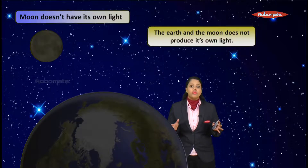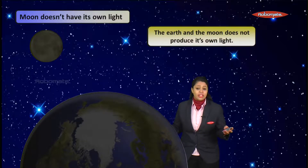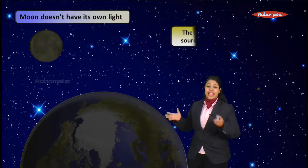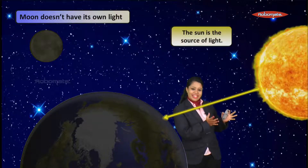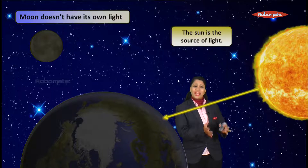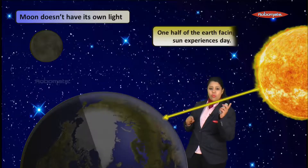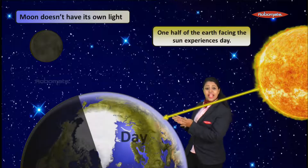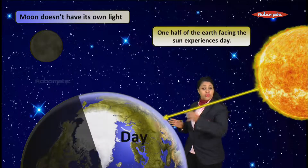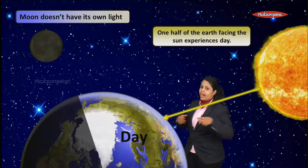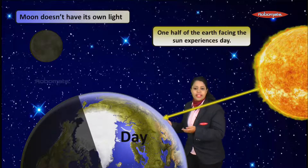The Earth and Moon do not produce their own light. The question arises — how does the Moon illuminate? That is because of the Sun, which is the ultimate source of energy. When light from the Sun hits the Earth, the side facing the Sun experiences day, and the other side experiences night.